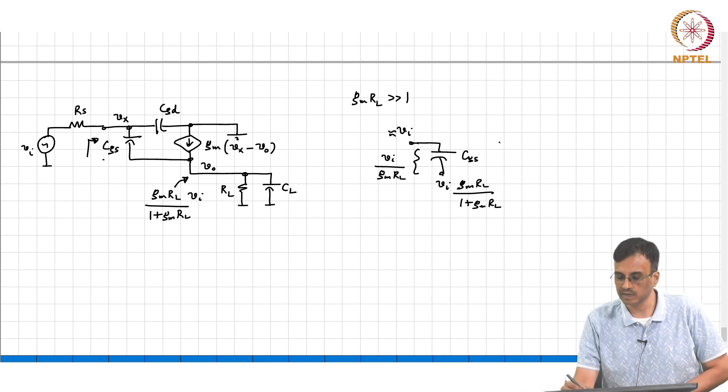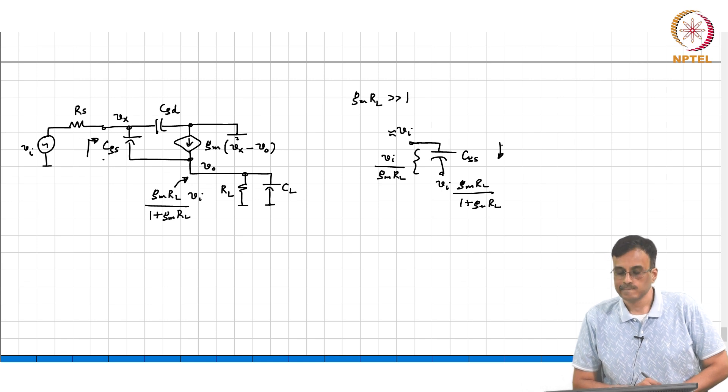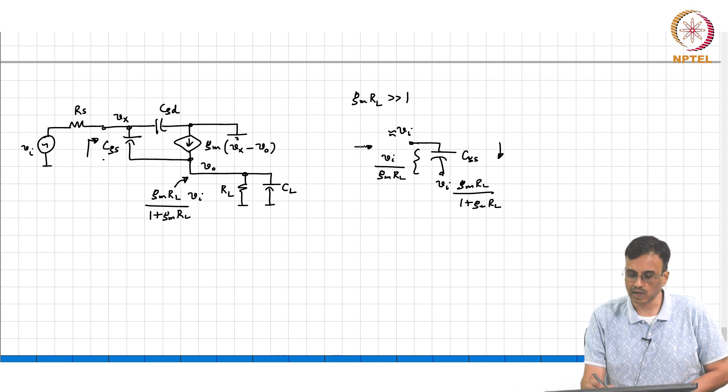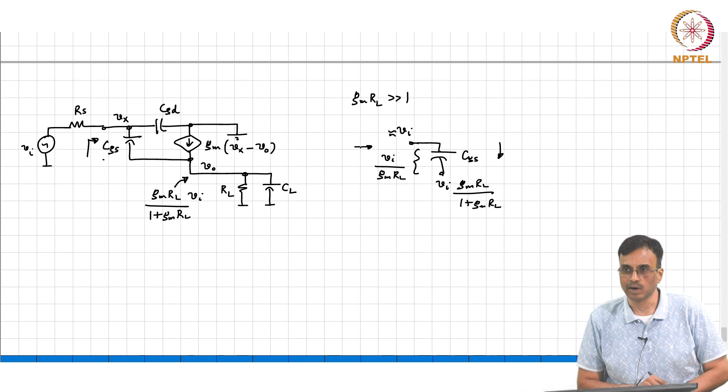That voltage is nothing but VI upon approximately GM*RL. So what is the current flowing to CGS? What is the looking in effective capacitance? CGS divided by GM*RL.